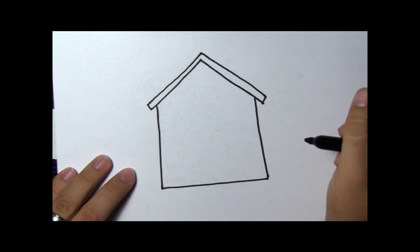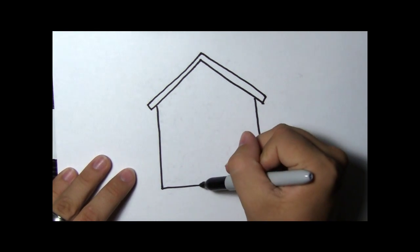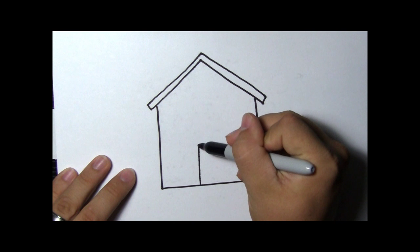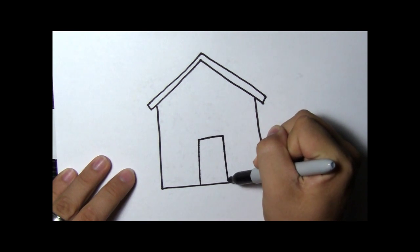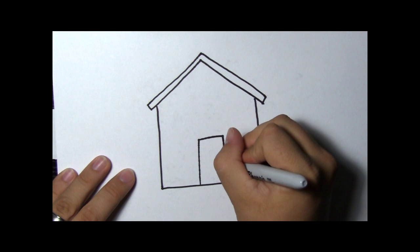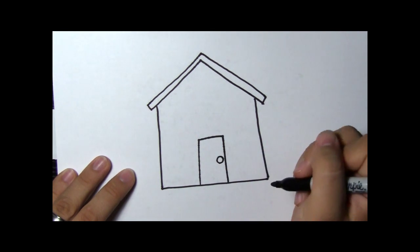Now how are we going to get into our house? We should put on a door. That's a rectangle in the middle of the house. It's going to have a doorknob, so draw a circle.